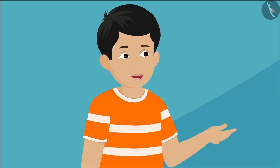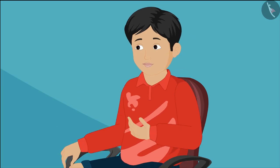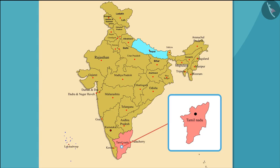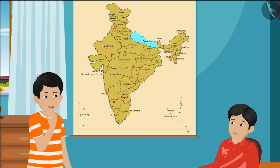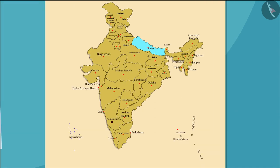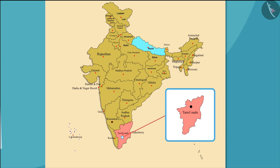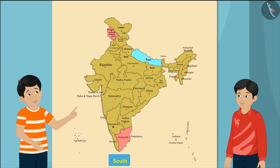In these holidays, I am going to Jammu and Kashmir with my parents. Oh wow! And I'm going to Tamil Nadu with my family. All right, but where is Tamil Nadu? Look at this map carefully — Tamil Nadu is a southern state of India, and this is Jammu and Kashmir, where you are going for the holidays.